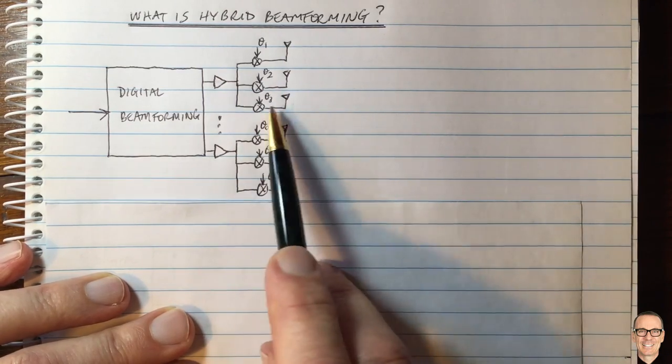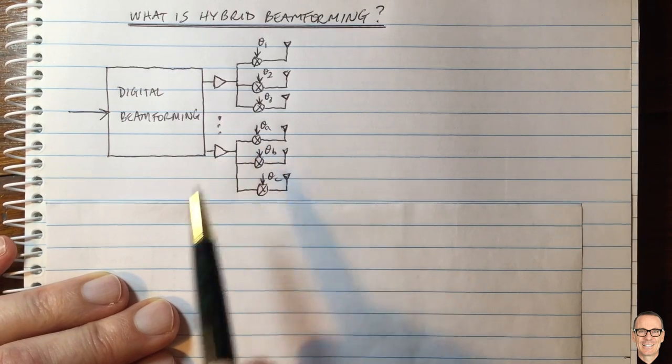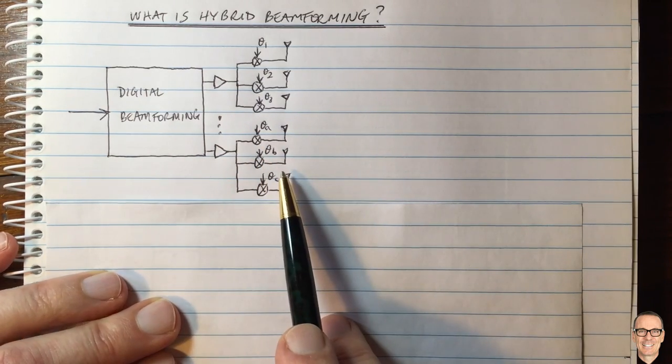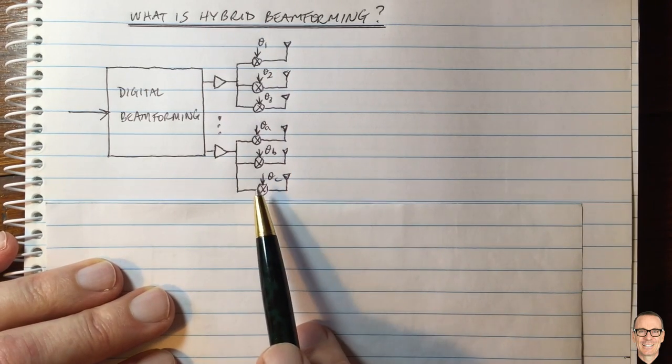And why do we have to do this hybrid? Why is it that physics and the frequency demand that we need this structure? It's not really so much our choice to have hybrid, it's more that we have to. Why is that?